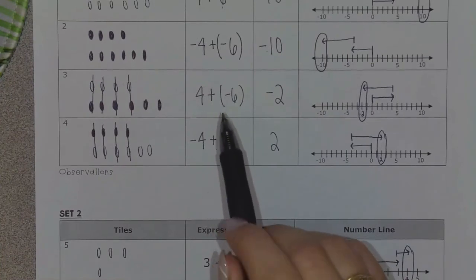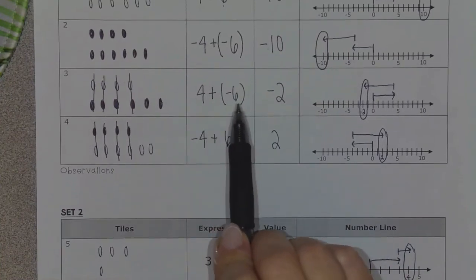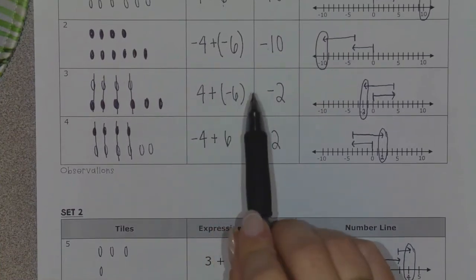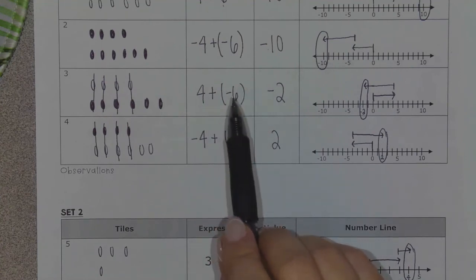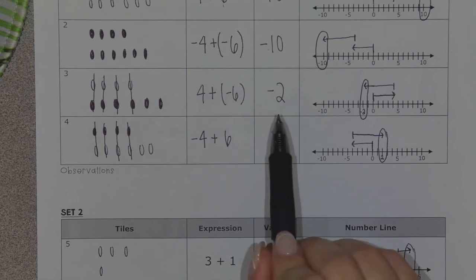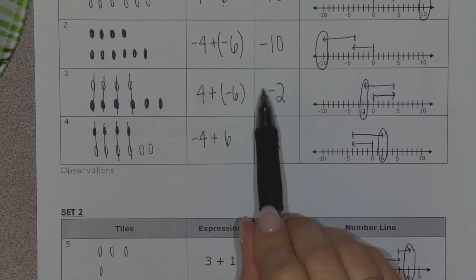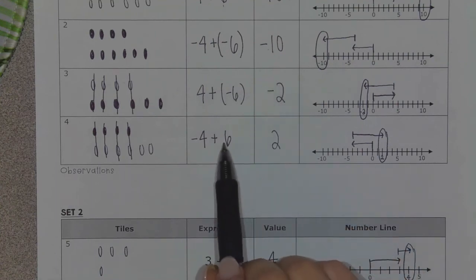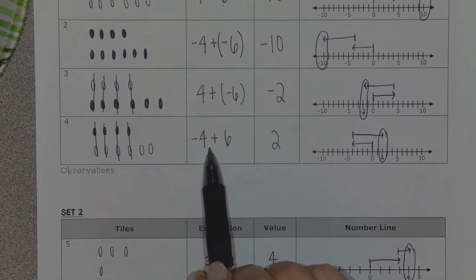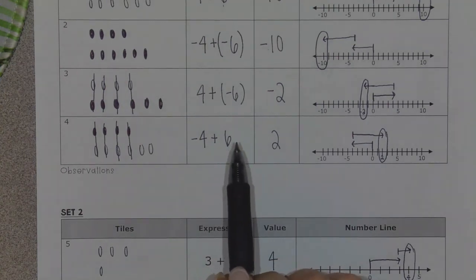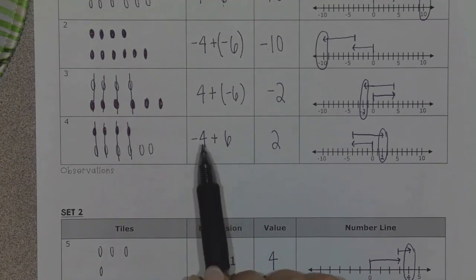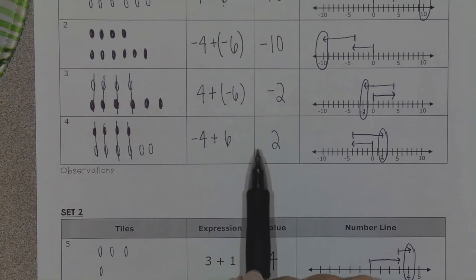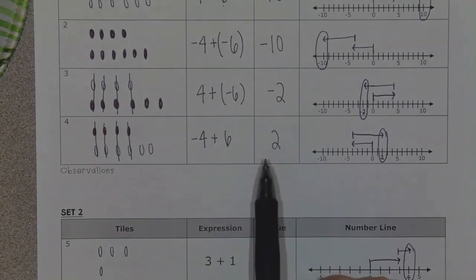Same thing up here with positive four plus negative six: negative six has a bigger absolute value than positive four, so we did six minus four and kept the sign with the bigger absolute value. And down here with negative four plus positive six: positive six has a bigger absolute value than negative four, so we kept the positive sign in front of it.